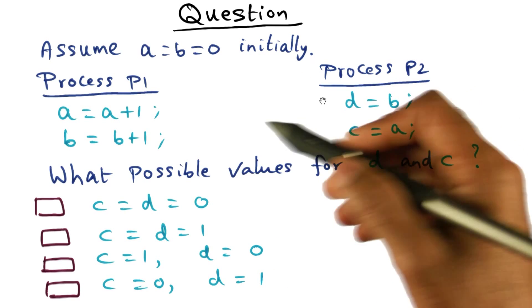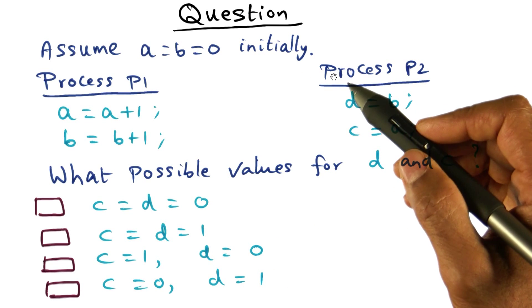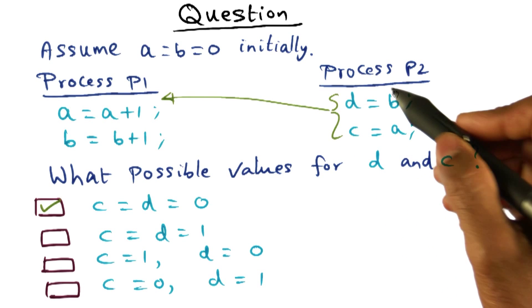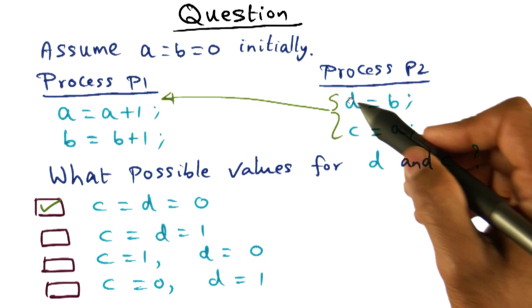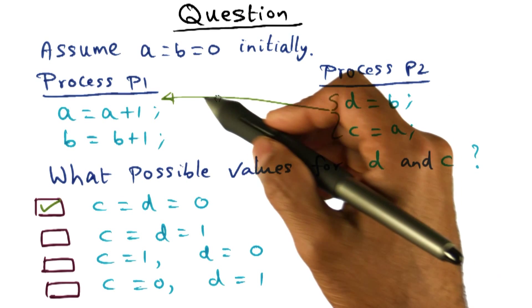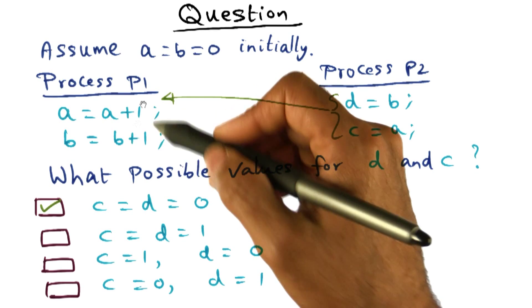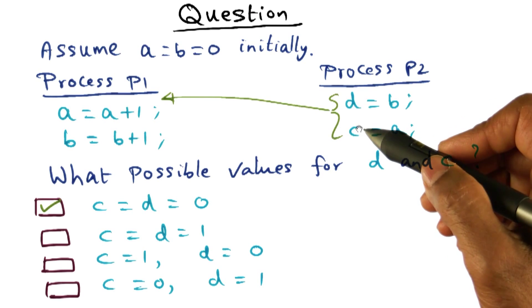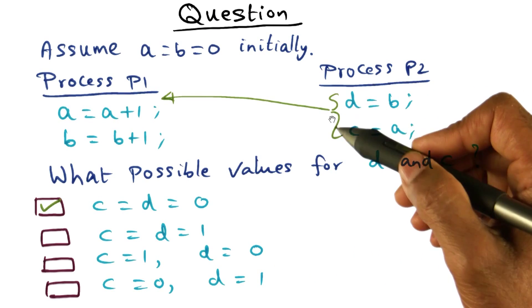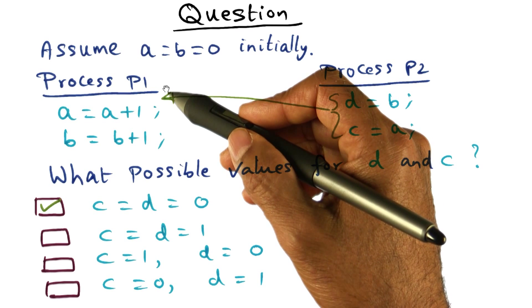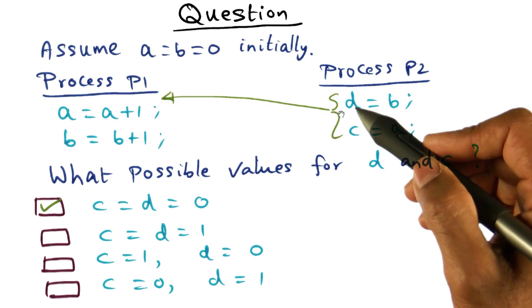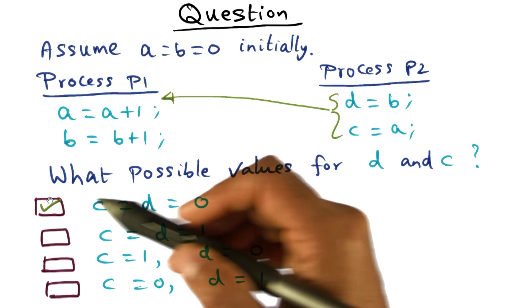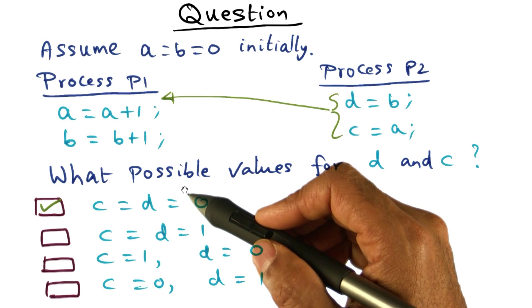We have no way of knowing what is going on with the shared memory. Now the first possibility is that these two instructions, assignment of B to D and C to A, they happen in time order before any of these instructions executed. That's possible because if these shared memory accesses happen before these guys, then it is possible that both of these instructions got executed before any of these instructions executed. And in that case, what you will get into D and C are the old values of A and B, namely 0.